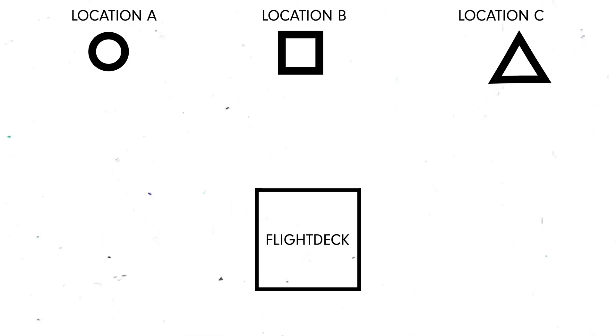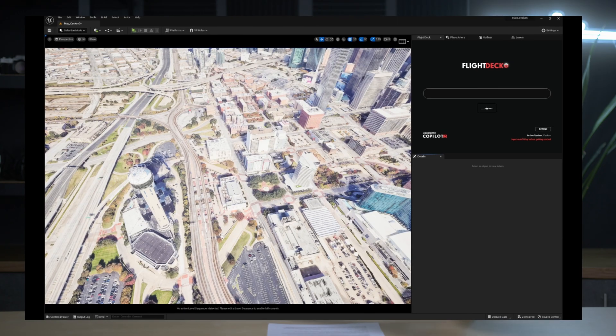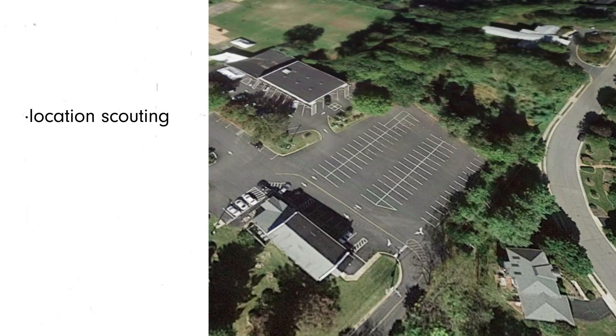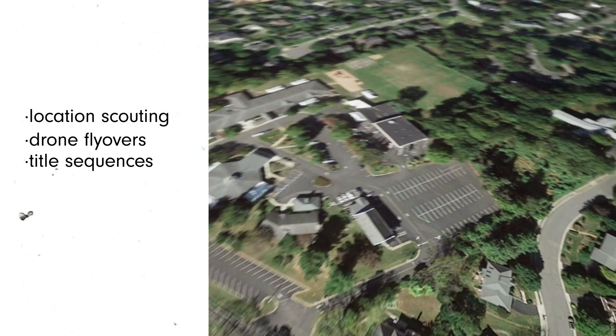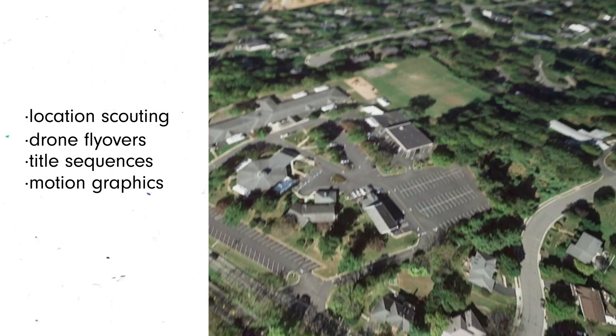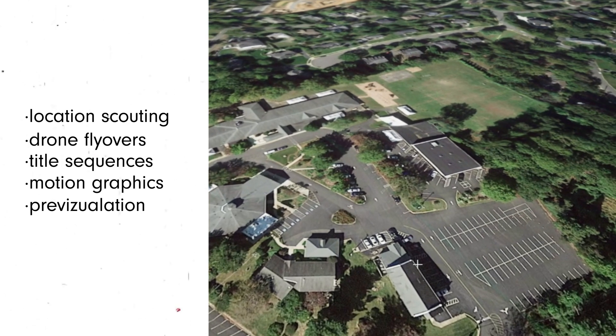Imagine Flight Deck to be like an international airport. It connects people to different countries around the world all from one central hub. For this early beta version, we used Cesium and Google Maps to show off what's possible — everything from location scouting, drone flyovers, title sequences, motion graphics, and previs are now possible with just a simple prompt.